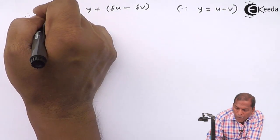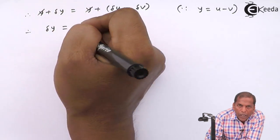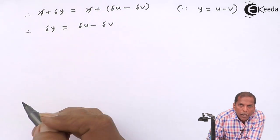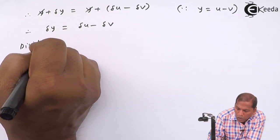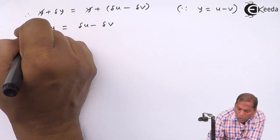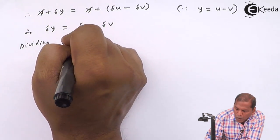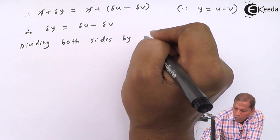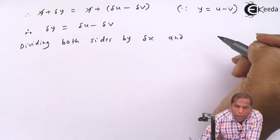Now cancelling y from both sides, the next step will be δy equals δu minus δv. Now dividing both sides by δx and taking limit as δx tends to 0.